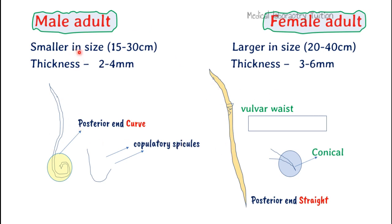The male worm is smaller in size, 15 to 30 cm, while the female is larger, 20 to 40 cm. Our drawing scale is 15 cm, so you can imagine that a 30 cm adult worm can be found inside an infected person. Thickness (width) is 2 to 4 mm in males and 3 to 6 mm in females. A very unique differentiating feature is that the male has a curve at the posterior end, while the female has a straight posterior end.